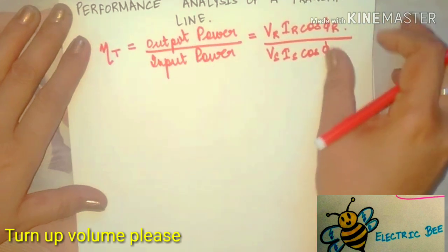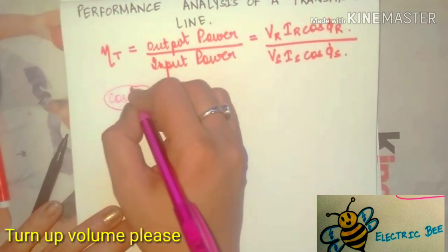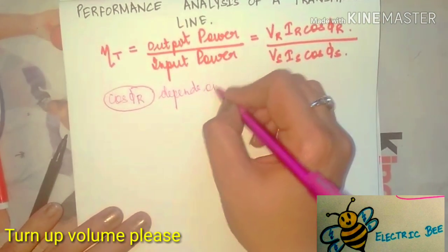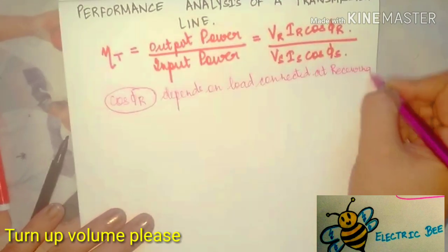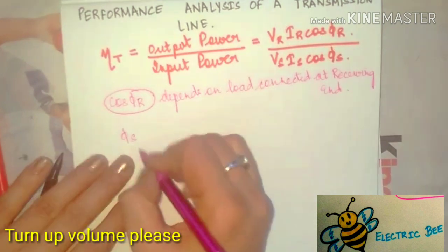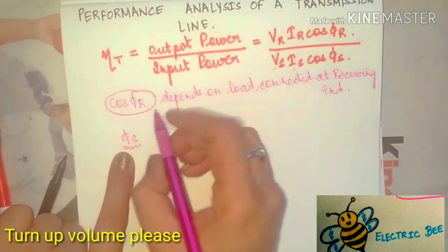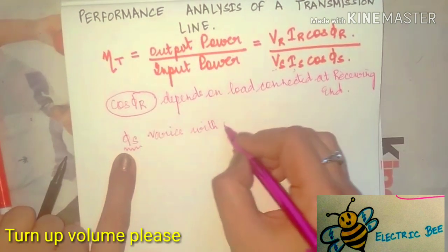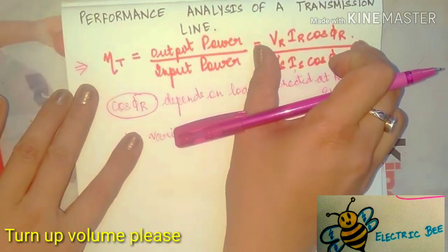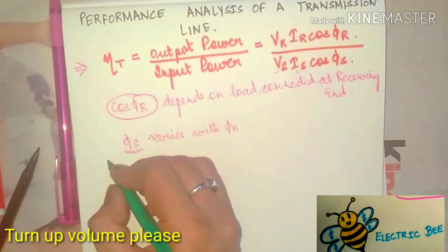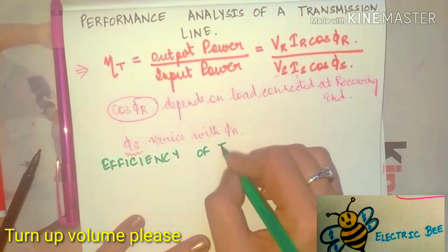The receiving end power factor cos φR depends on the load connected, which is generally at the receiving end. The sending end angle φS is between the sending end voltage and current, and it varies with the receiving end angle between the receiving end voltage and current. This efficiency is one of the performance analysis factors for the transmission line.